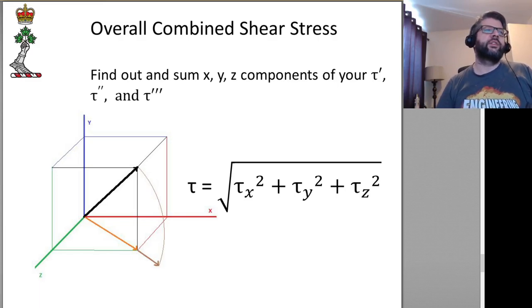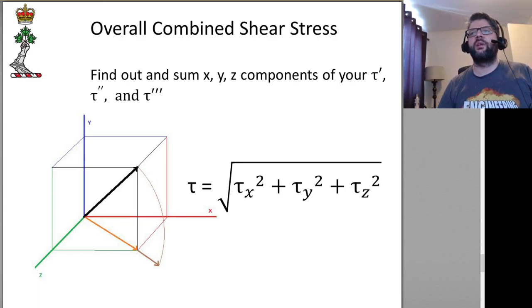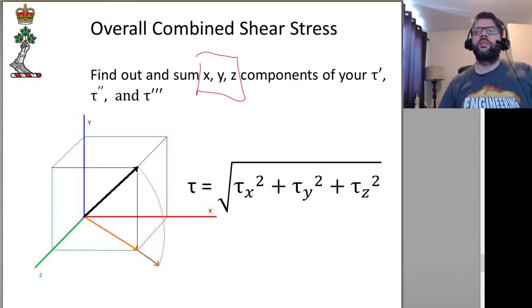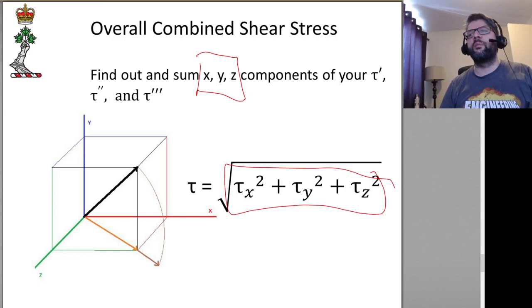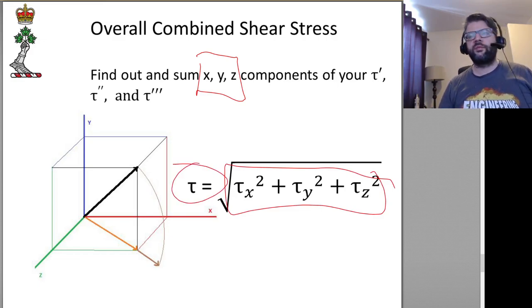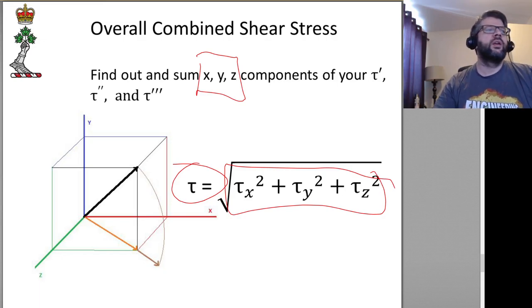Depending on the loading situation, you may get X, Y, and Z components of the stresses. Just break everything up and add them together using Pythagoras' theorem — this gives your total shear stress for the weld.